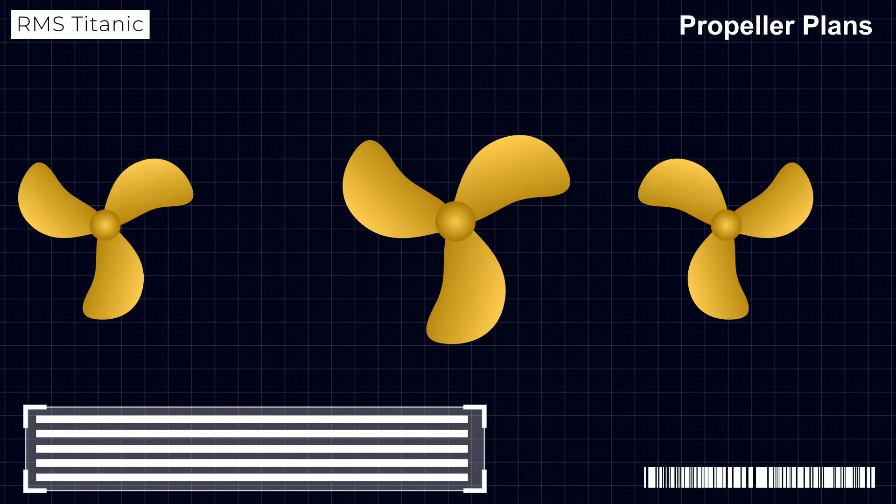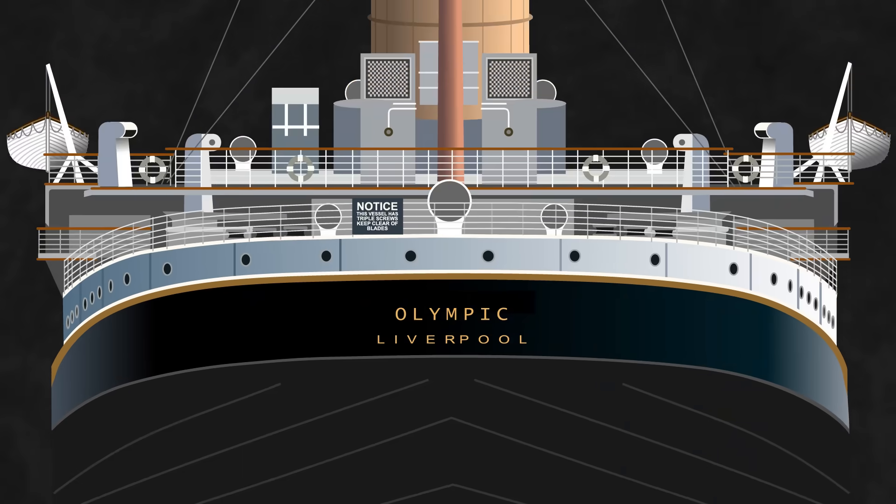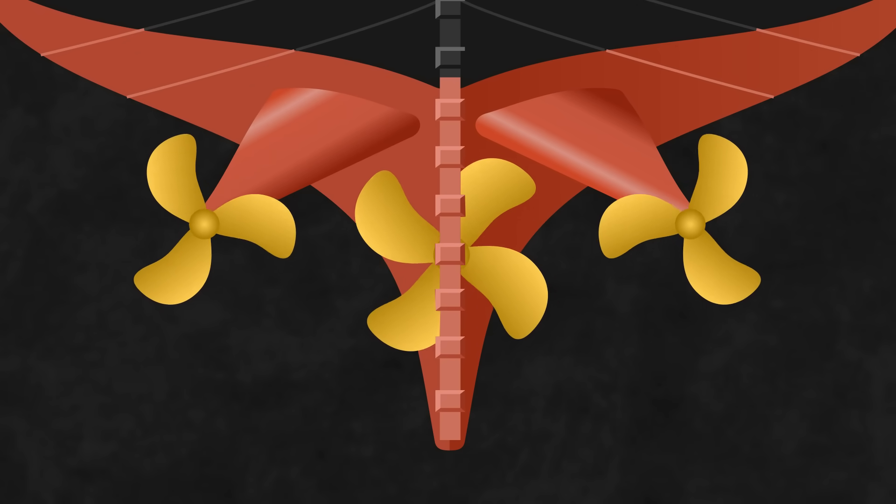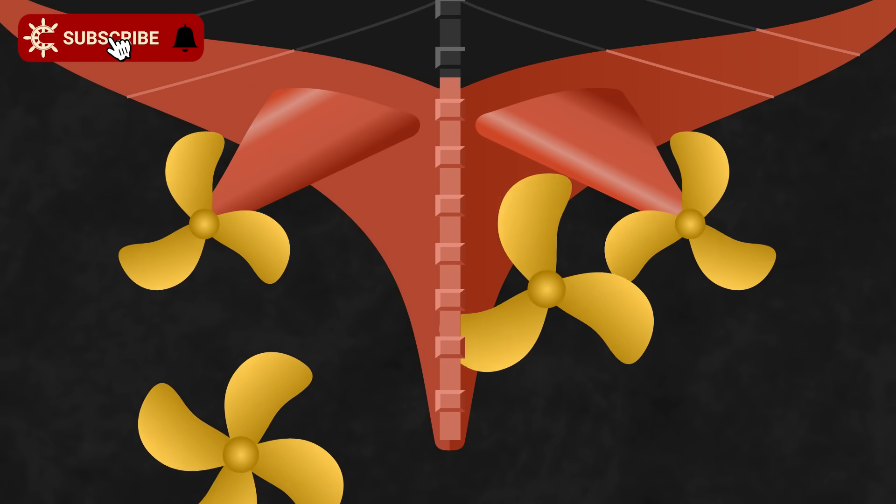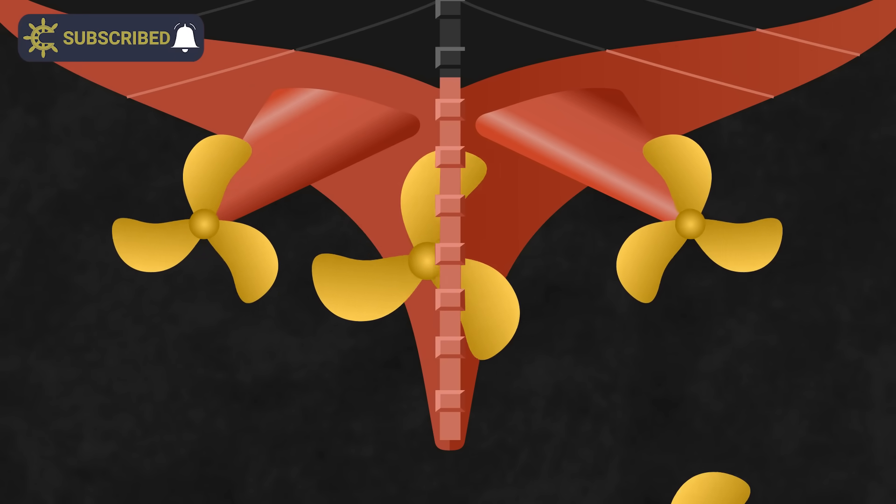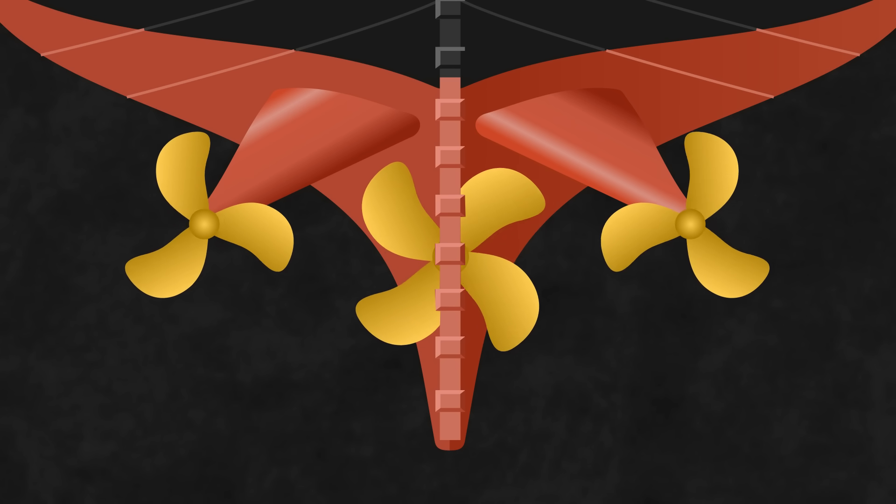The ship's plans always had it down as a three-bladed, yet her sister, the Olympic, started life with a four-bladed one, swapped to a three-bladed during a refit in 1912, and then refitted her four-bladed one during another refit sometime before 1919.